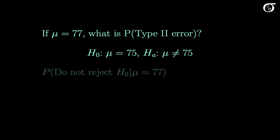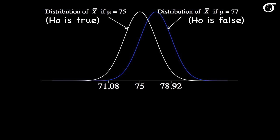Let's look at a different example in which we're asked to calculate the probability of a type 2 error directly. If mu is actually 77, what is the probability of a type 2 error? A type 2 error is not rejecting the null hypothesis when it is false. Here I've plotted the distribution of x-bar when the null hypothesis is true (white curve), and when mu is actually 77 (blue curve). A type 2 error is the probability that the sample mean falls between 71.08 and 78.92 when mu is actually 77.